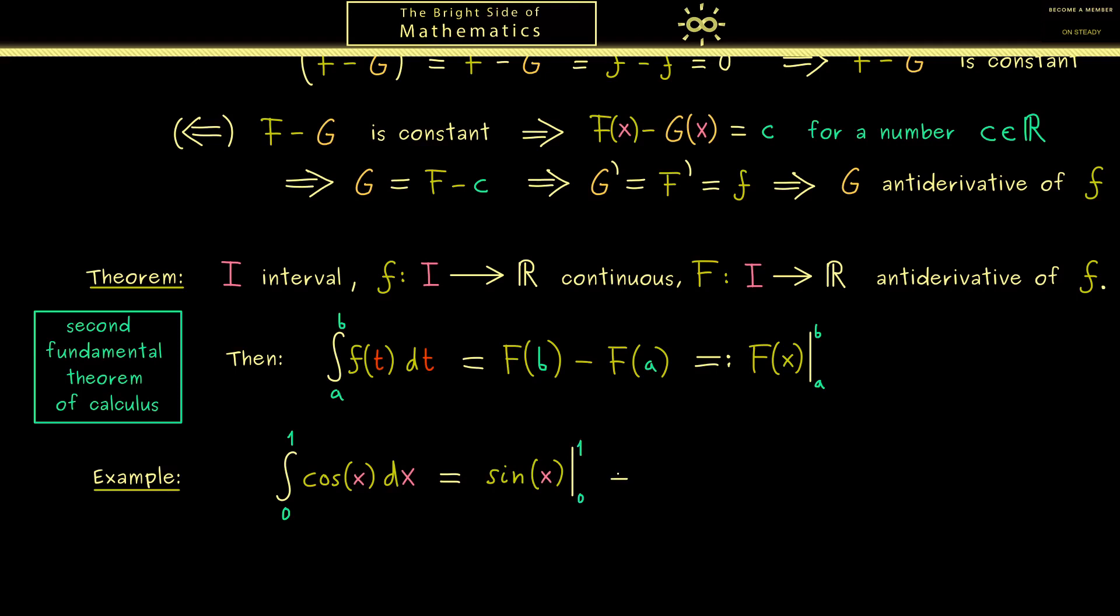Now the calculation just tells us put in 1 and put in 0. However, sine of 0 is 0, therefore only sine of 1 remains. And there you see sine of 1 is the value of this integral here.